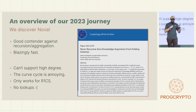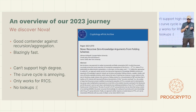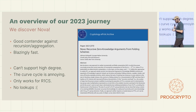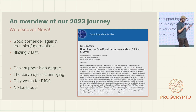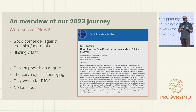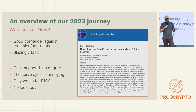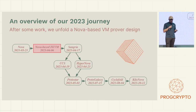But we quickly found some issues: you don't have high degrees, because if you have them, everything blows up. You need curve cycles, only R1CS, no lookups. So for the things that we are writing these days, it really didn't work.